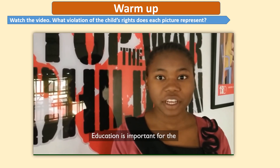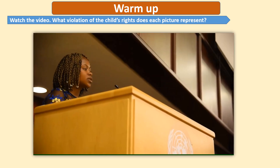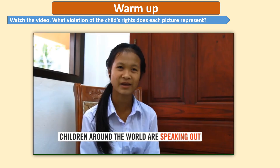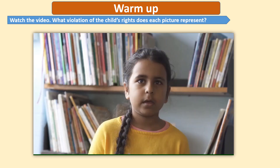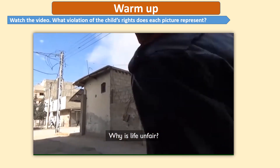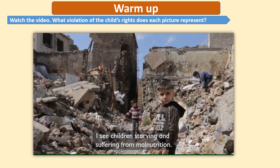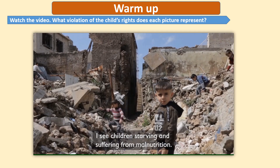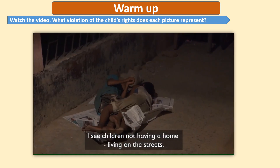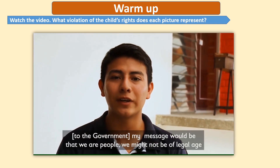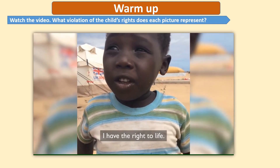Education is important for the personal, social and economic development of every nation. Why is life unfair? I see countries fighting. I see children wounded and orphaned. I see children starving and suffering from malnutrition. I see children not having a home, living on streets. The message is that we are people — we don't have the majority of age, but we think we are the same as you. It's domestic violence.